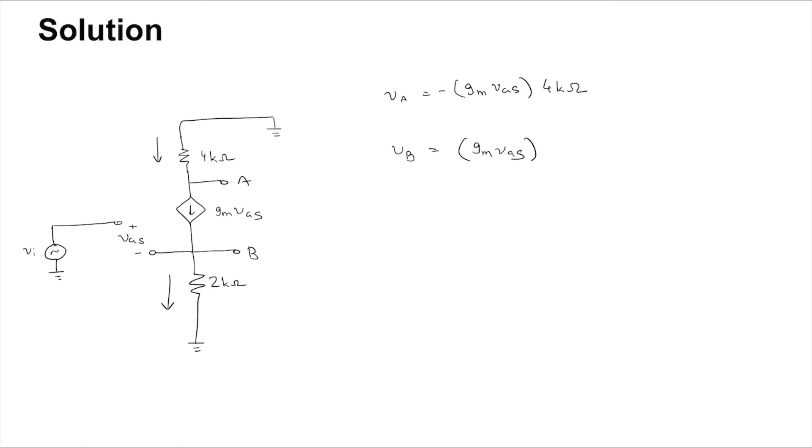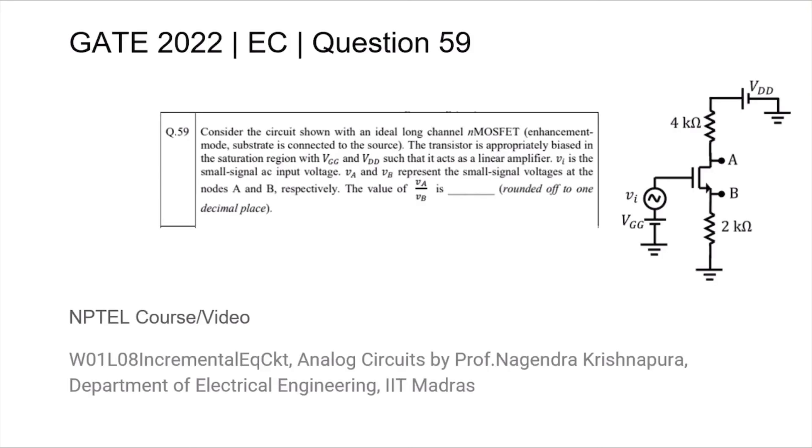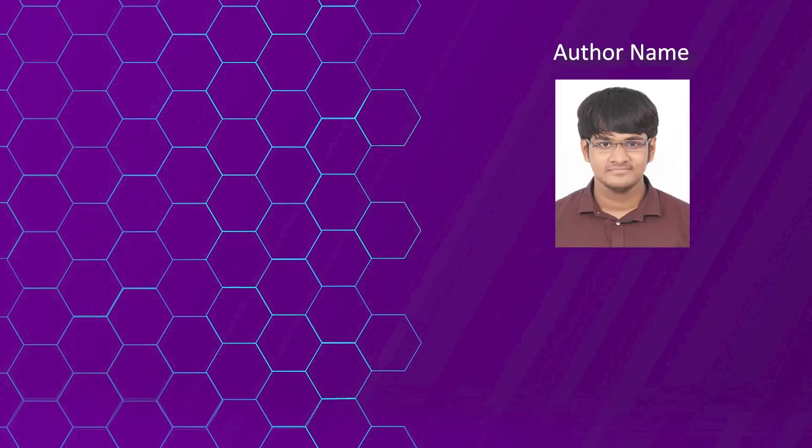What is VA by VB? Well, it is going to be minus 4 kilo ohm by 2 kilo ohm. The GM VGS will cancel, and so you will get this to be minus 2. So the answer is minus 2. Thank you.